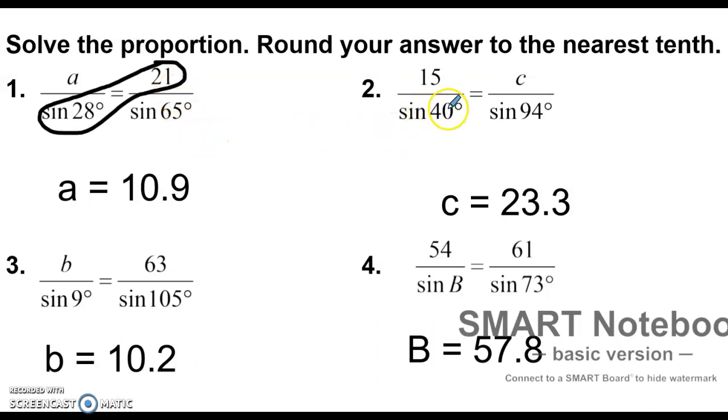Number 2, I'll walk you through it again. Multiply these two together. I go 15 sine of 94, find an answer, divide that by sine of 40. My answer is 23.27901, so I round that to 23.3.